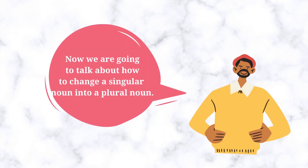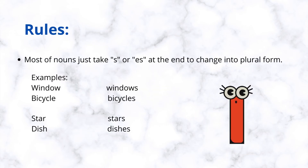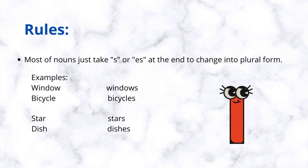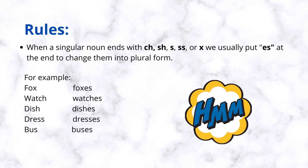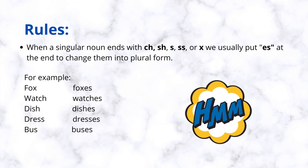Now we are going to talk about how to change a singular noun into a plural noun. Rules: most nouns just take s or es at the end to change into plural form. When a singular noun ends with ch, sh, s, ss, or x, we usually put es at the end to change them into plural form.